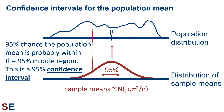As an example, if we identify the middle 95% of a normal distribution around our sample mean, there's a 95% chance the population mean is within that 95% region. We call this region a 95% confidence interval, because it indicates where we are confident the population mean is. Note that the width of that confidence interval will be based on the variance in the population and the number of values in the samples.